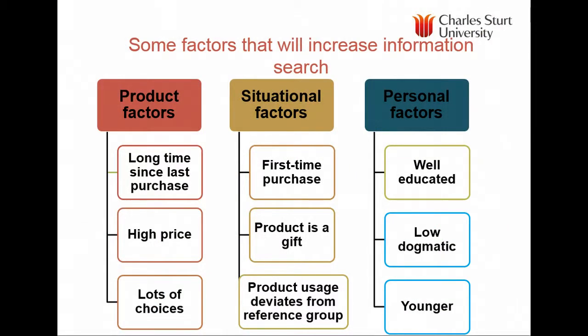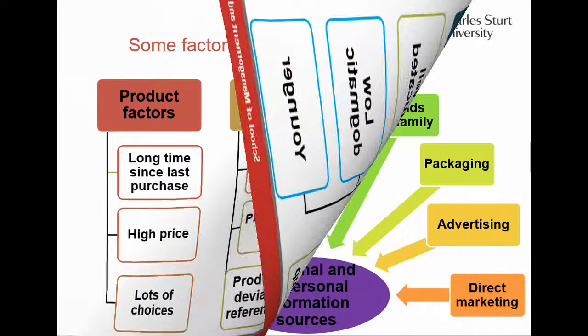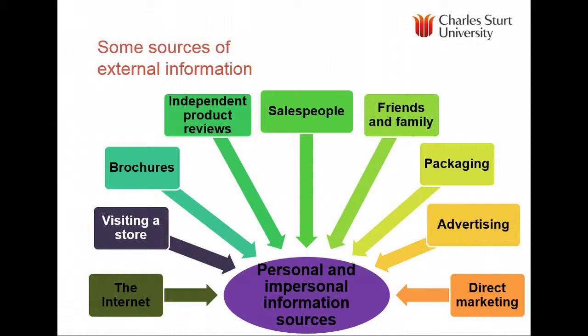Factors that increase search include: having lots of choices, higher prices such as housing, buying a car, or a university education. Situational factors — if you've never bought a house or car before — increase search, as does buying a gift for someone. If the product deviates from what the reference group is familiar with, search increases. Personal factors: well-educated, less dogmatic, and younger people tend to search more, as they don't yet have the experience to rely on existing knowledge.